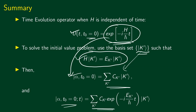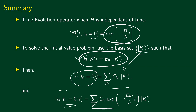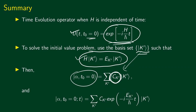The state at a later time is given by the sum over k-prime of c_k-prime times exponential minus i E_k-prime t divided by h-bar, multiplied by ket k-prime. The difference between the initial state and the state at a later time is that each of the expansion coefficients has been multiplied by a phase factor exponential minus i E_k-prime t divided by h-bar. This is how states evolve with time.